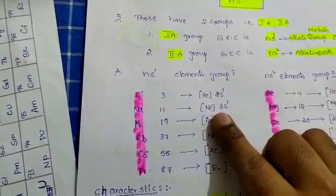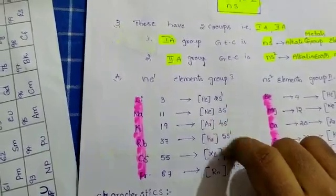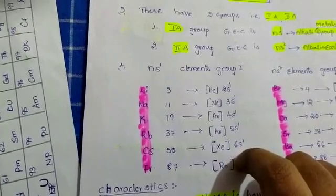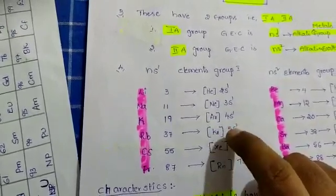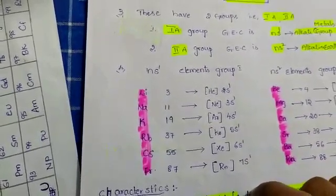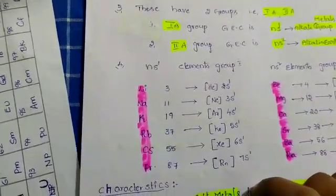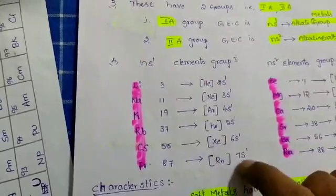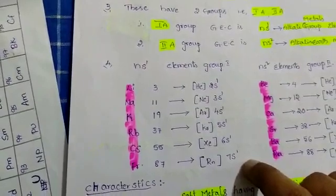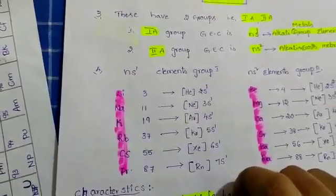Potassium has atomic number 19, configuration [Ar] 4S1. Rubidium has atomic number 37, configuration [Kr] 5S1. Cesium has atomic number 55, configuration [Xe] 6S1. Francium has atomic number 87, configuration [Rn] 7S1. Lithium to francium belong to 1A group elements — these are alkali metals.